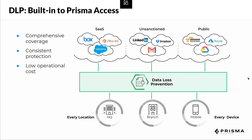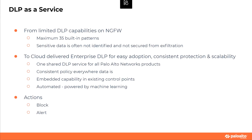DLP in Prisma Access is a built-in service. It covers consistently every location, every device, including branch and mobile users. It's discovering sensitive data in motion when data is traversing the network and going to the cloud. The policy is consistent everywhere and there is low operational cost because the service is embedded in Prisma Access. We're going from limited data protection capabilities — 35 built-in patterns in our firewalls — to a cloud-delivered enterprise-grade DLP, enabling easy adoption with no additional product to manage, and consistent protection and scalability.